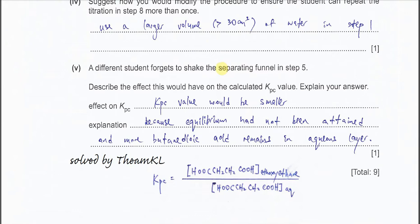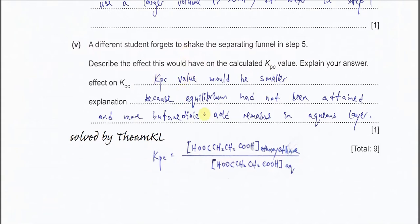For part 5, a different student forgets to shake the separating funnel in step 5. This means the butanedioic acid may not fully distribute into the organic layer. Therefore, the concentration of butanedioic acid in the ethoxyethane would be lower than expected, making the calculated KPC smaller than the true value. This is because equilibrium has not been attained, and more butanedioic acid remains in the aqueous layer.